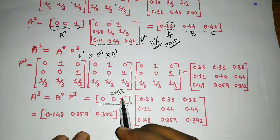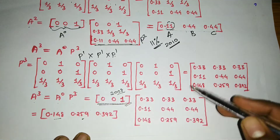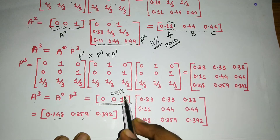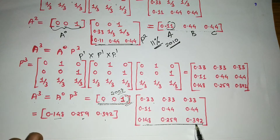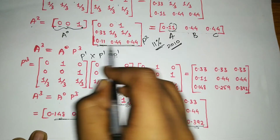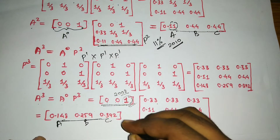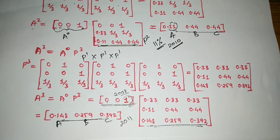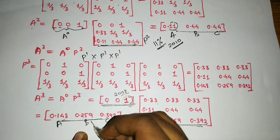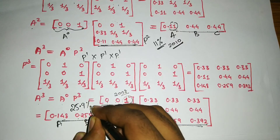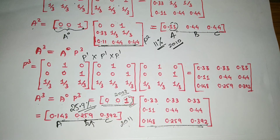Multiplying a⁰ × P³, since the first two elements are zero and the third is one, we just take the last row of P³ directly. This gives us the probabilities for brands A, B, and C in 2011. The probability of having brand B in 2011 is 0.259, or 25.9%. So the probability that he will have a brand B car in 2011 is 25.9%.